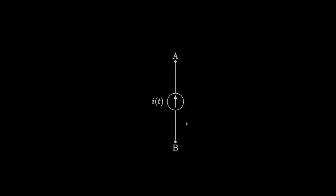A simple current source in an electric circuit is an element that provides a predetermined current through its terminals. The symbol for a current source looks like this, where the current through the terminals is equal to I of T, and the direction is specified by the arrow within the symbol. So in this case, a current of I of T would flow from terminals B to A when these terminals are hooked up into a more complicated circuit.